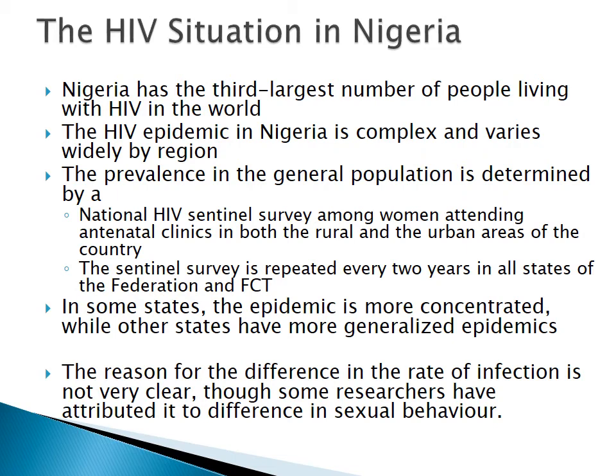The most recent survey in Nigeria was done on a household basis, moving from house to house. In some states, the epidemic is more concentrated, while in others it is more generalized. Some states have hotspots where infection is especially high and relatively lower elsewhere. The reasons for these differences are not entirely clear, though some researchers attribute them to differences in sexual behavior across different parts of the country.